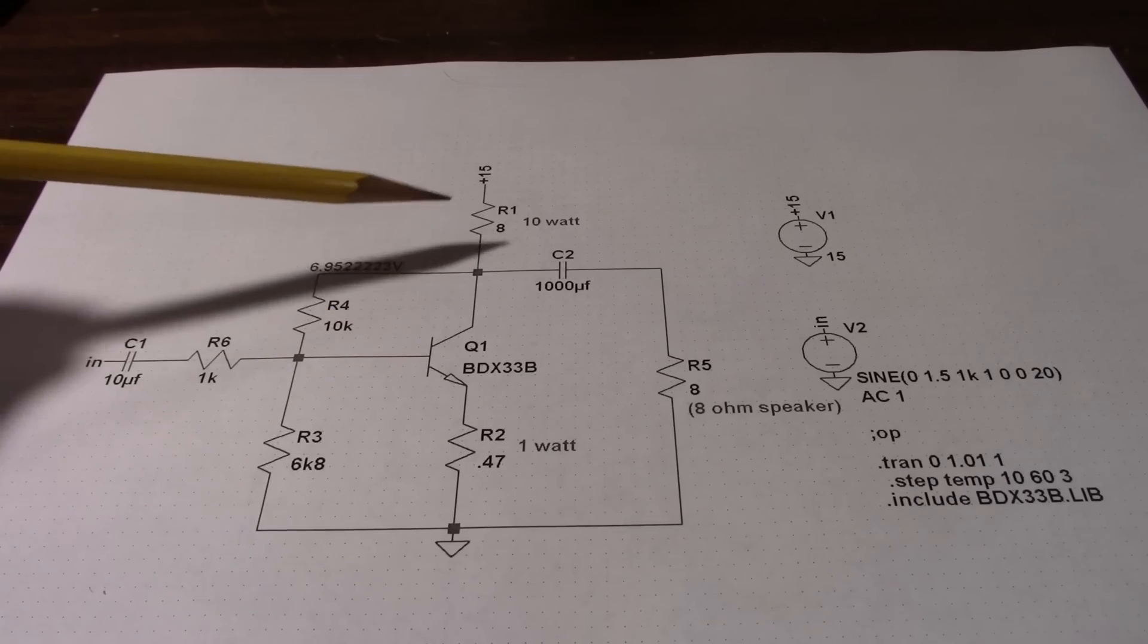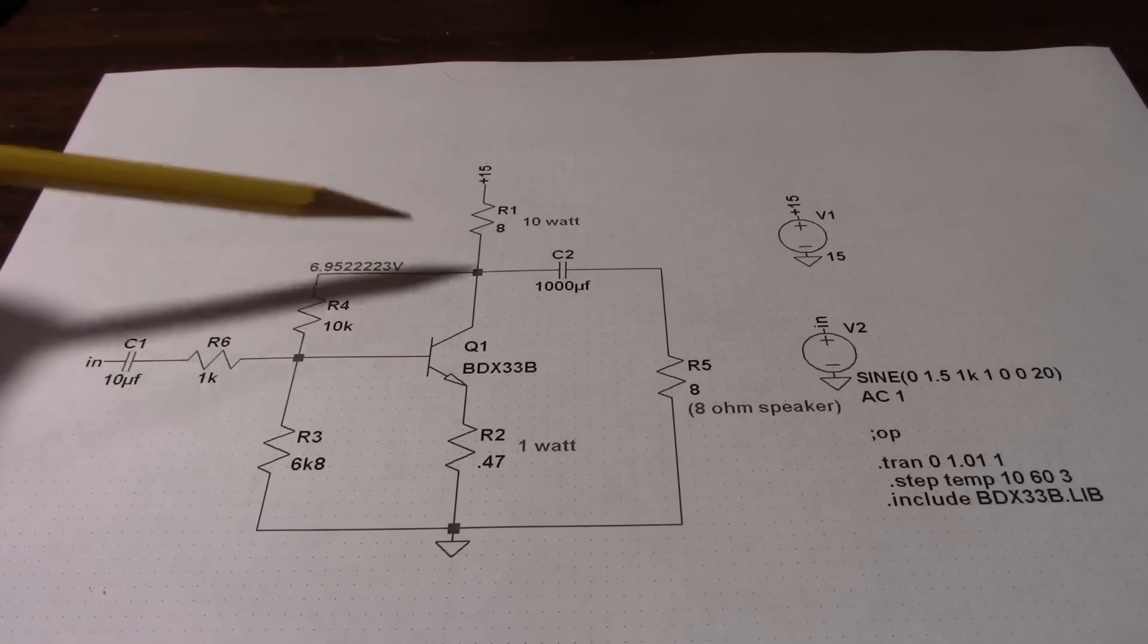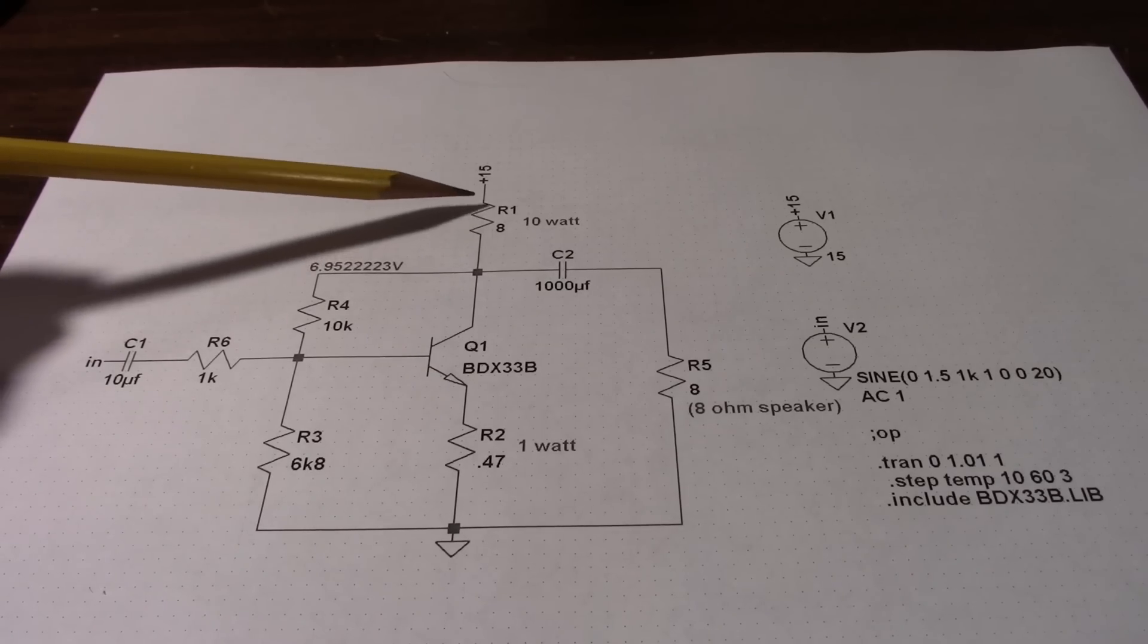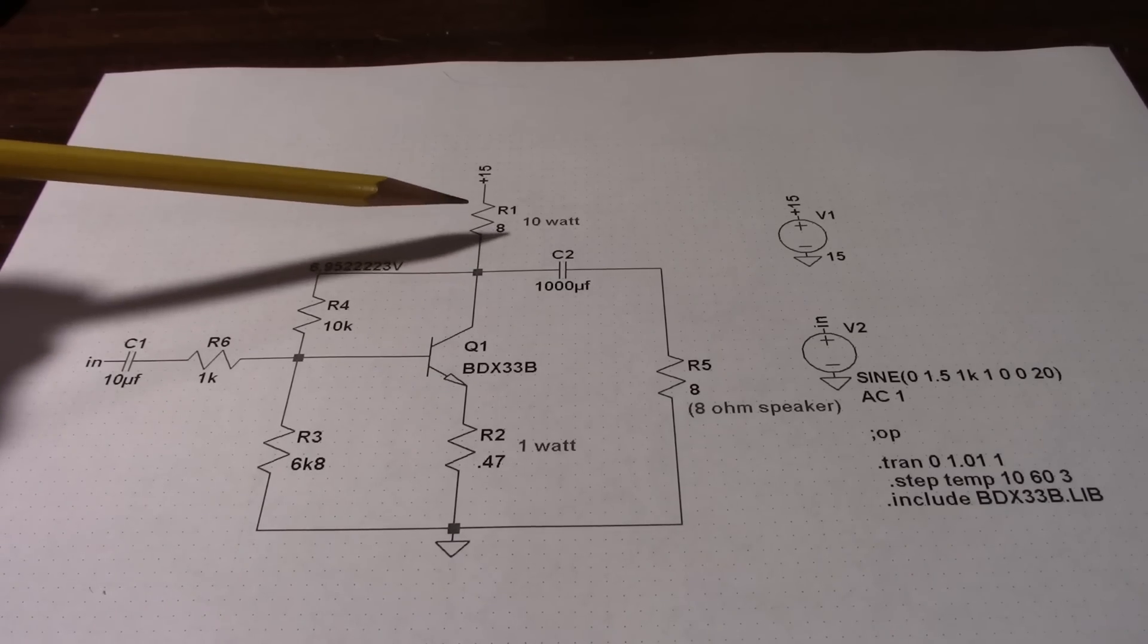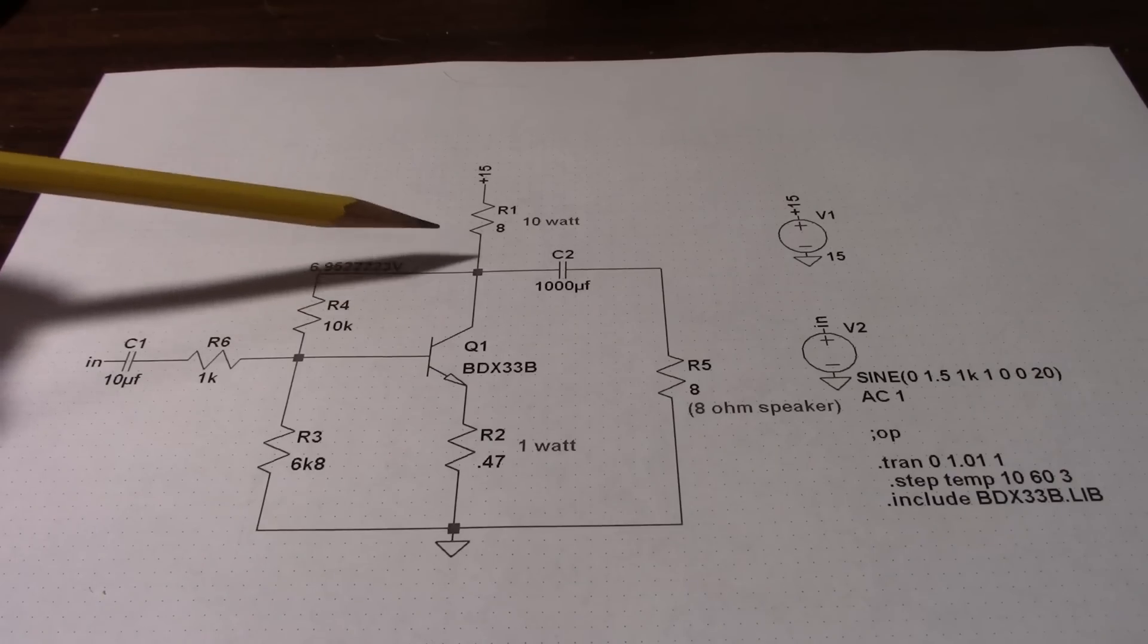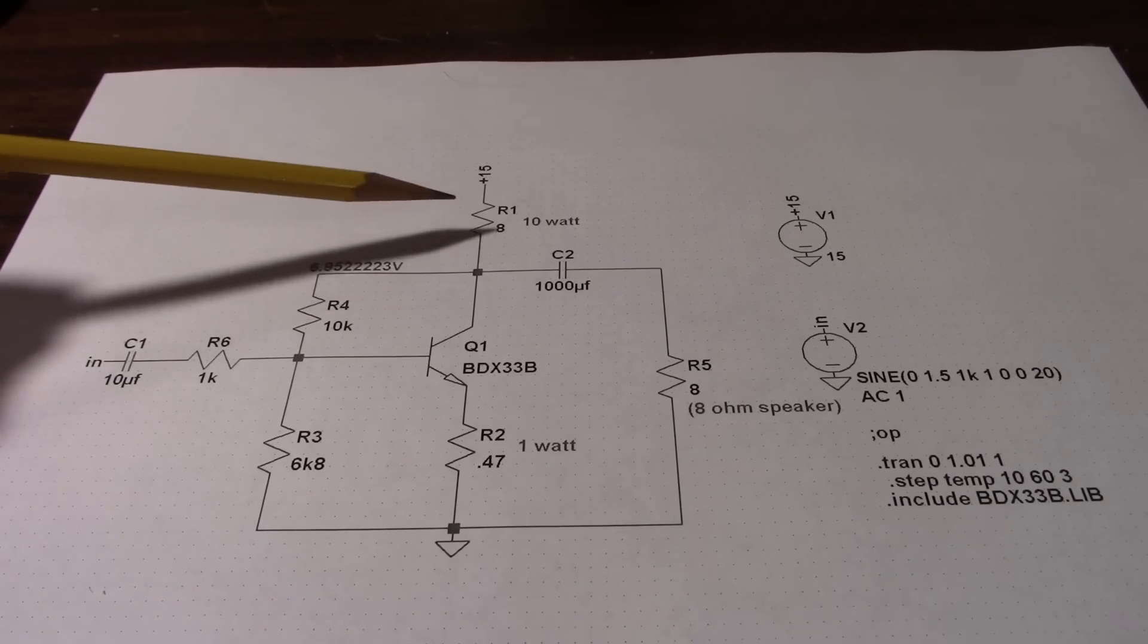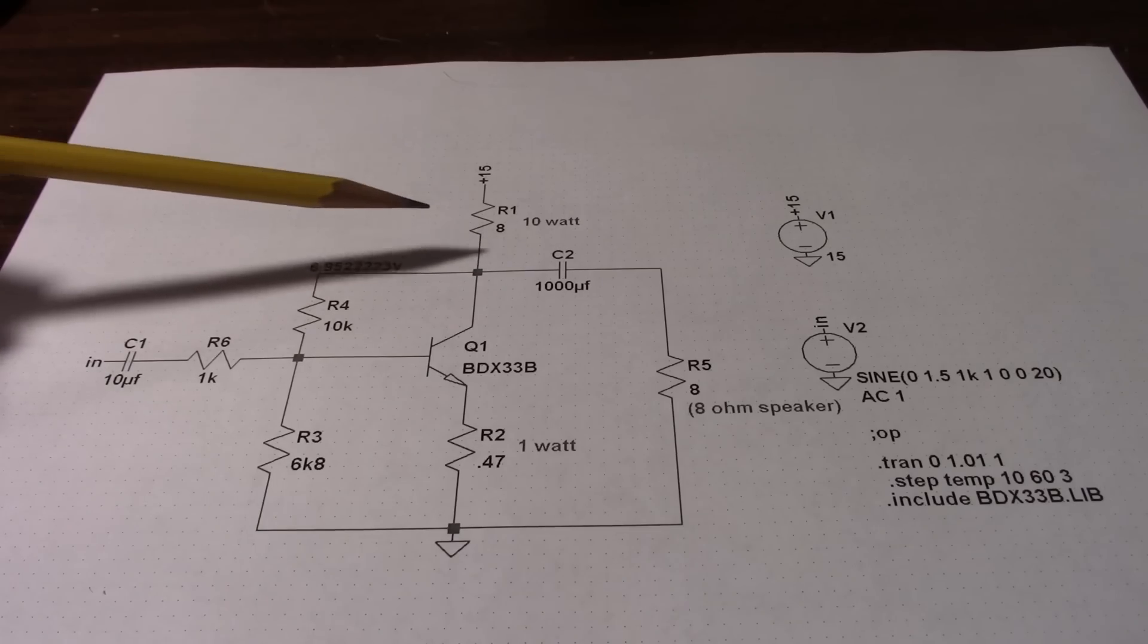One thing you usually see in these circuits is a constant current source or even an inductor, but in this circuit I'm not using one. I'm just using a resistor to make this as simple as possible. However, doing so I have to make some concessions because a resistor makes a lousy constant current source.